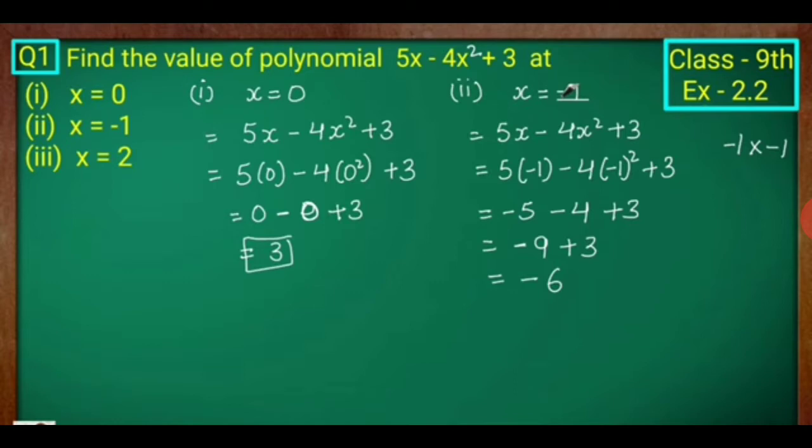Here x is the variable, and 0, minus 1, and 2 are different values. First, we will find out the value at x equals to 0.